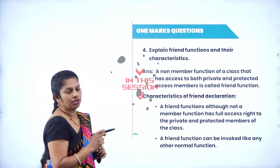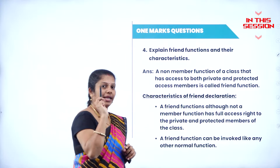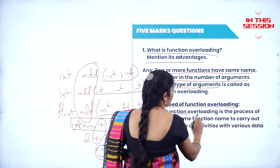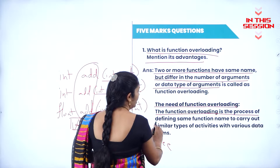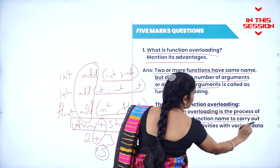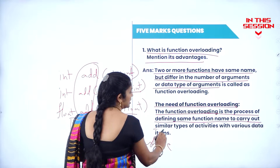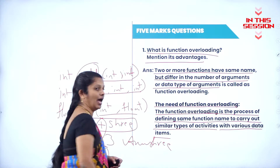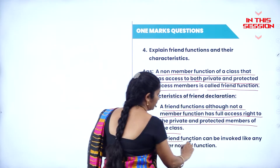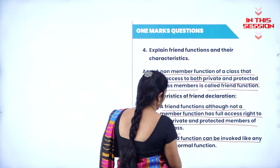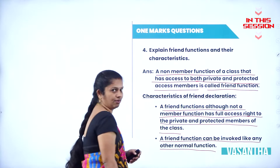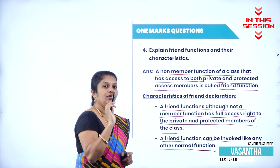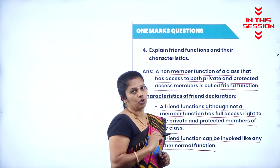Friend function is a non-member function but it can access private items also. Function overloading is the process of defining the same function to carry out similar types of activity with various data items. A friend function can be invoked like other normal functions, but to define this function outside the class, we do not require the scope resolution operator.